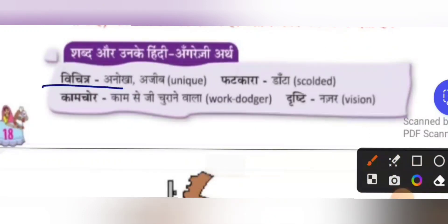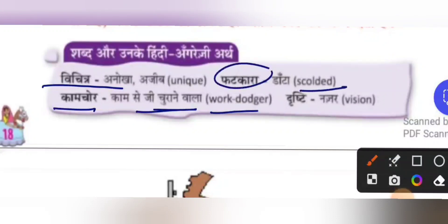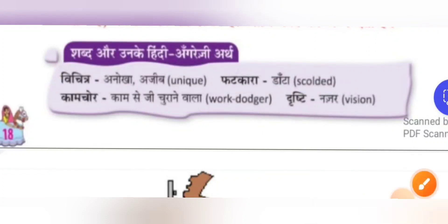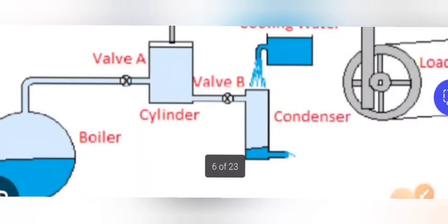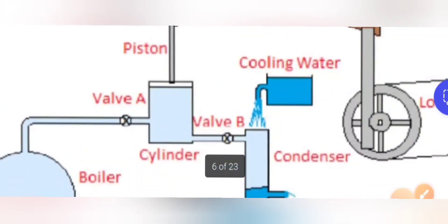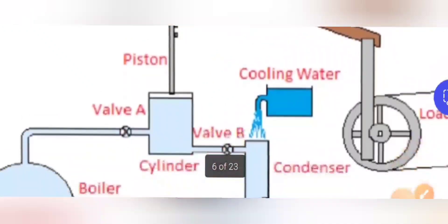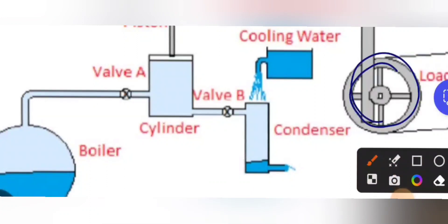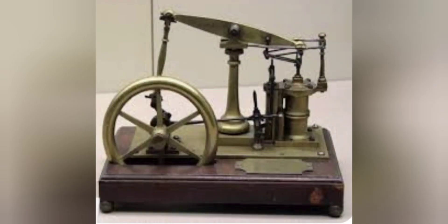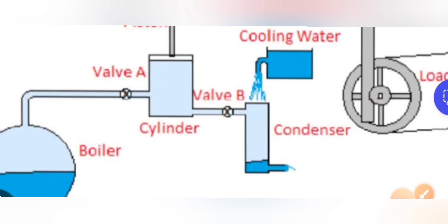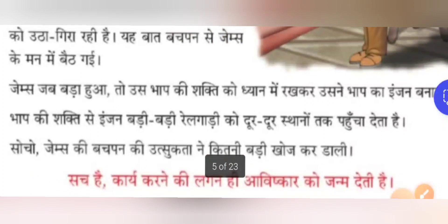Some vocabulary from this lesson: vichitra means anoka, ajeeb — unique or weird. Kamchor means kamse ji churane wala — someone who doesn't have an interest to do work, lazy. Fatakara means dhanta — scolded. Drishti means nazar — what he could see in his eyes was the boiling kettle. In the steam engine, steam moves the valve up and down, and through the valve the wheels start to move — this is how the trains are pulled, the engine pulling the train from one place to another. When you go to higher classes, you will be able to read in detail. Hope you understood the lesson. If you have any doubt or clarification, put it in the comment section and I will surely reply. Thank you students.